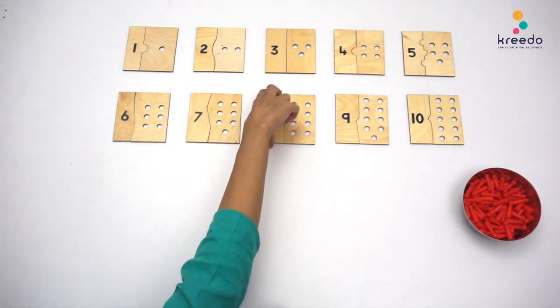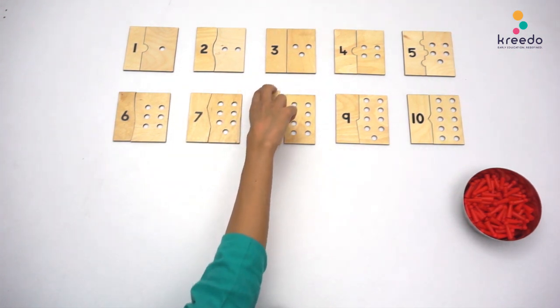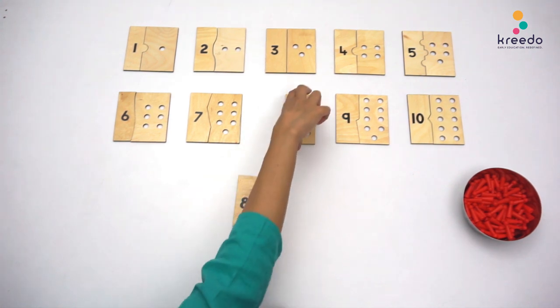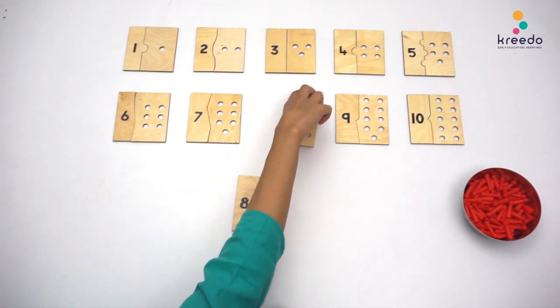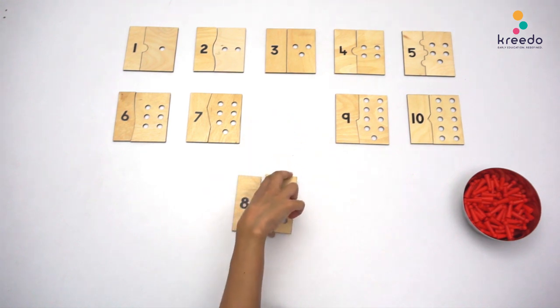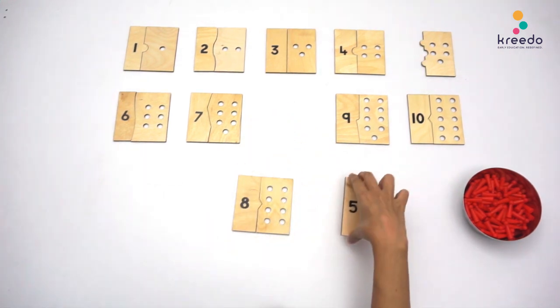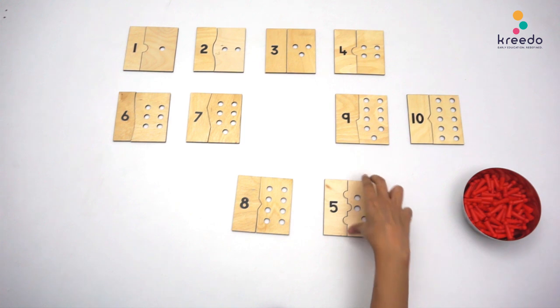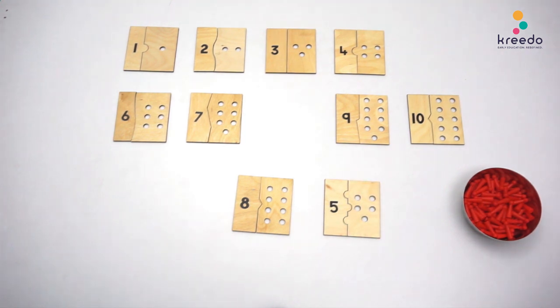Pick any two numbers and place them in front of the child. Tell the child to place Skittles in the slots.